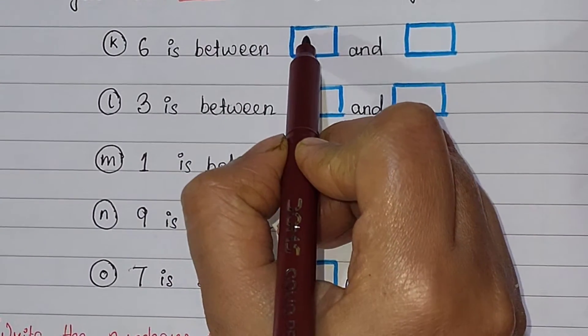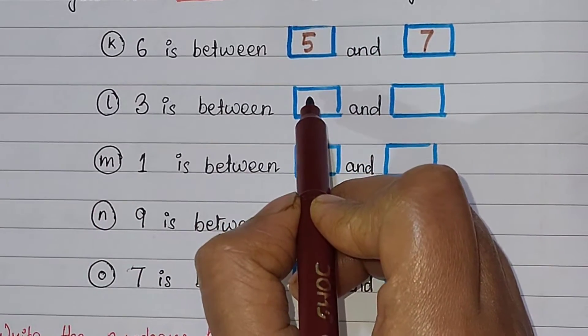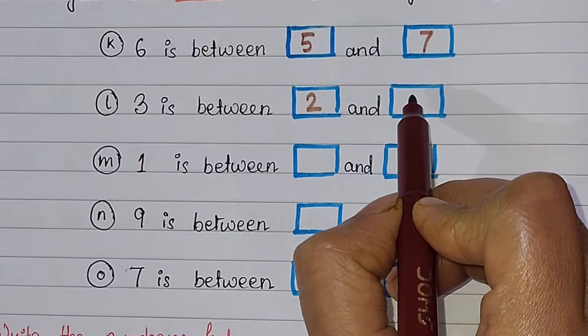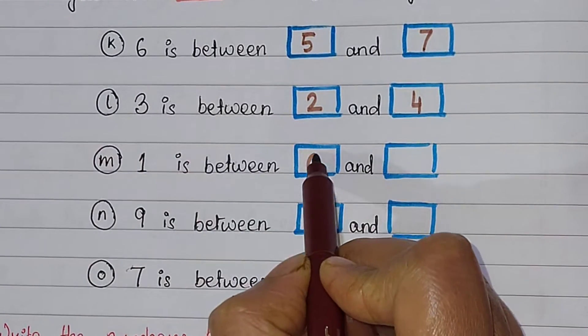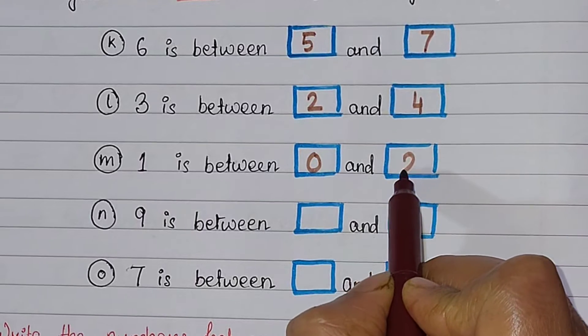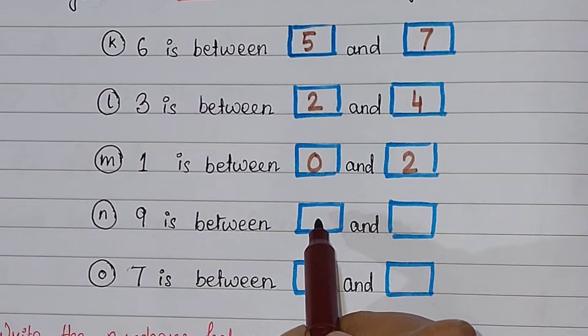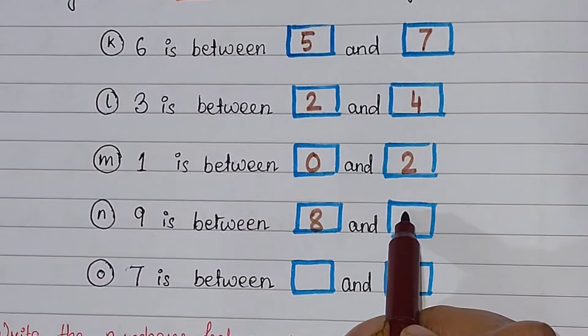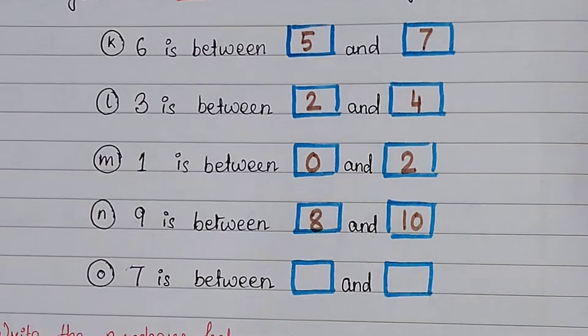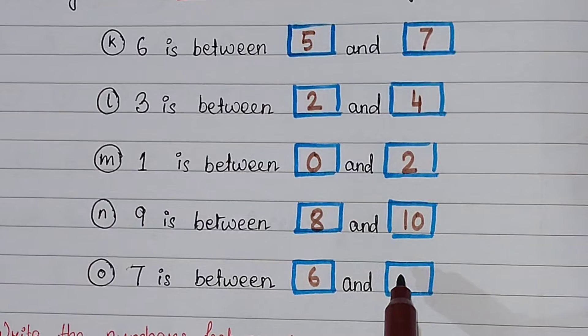Next question is 6 is between which numbers? It is 5 and 7. Next, 3 is between 2 and 4. 1 is between 0 and 2, and 9 is between 8 and 10. And the last one, 7 is between 6 and 8.